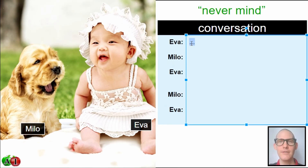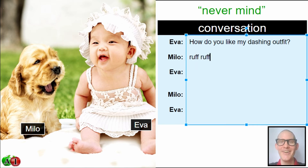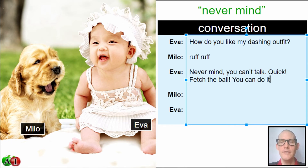We're going to use our imagination and say that Eva can talk. So Eva says: 'How do you like my dashing outfit?' Milo says: 'Ruff, ruff, ruff, ruff.' Eva says: 'Never mind. You can't talk. Quick. Fetch the ball. You can do it.' Milo says: 'Ruff.' Eva says: 'Never mind. You haven't learned that trick yet. Do you want to play chess?'